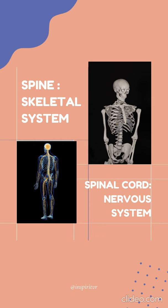Your spine helps you to sit, stand, walk, twist, or even bend. The spinal cord is a complex organization of nerve cells responsible for movement and sensation. It carries signals between the brain and the rest of the body. I guess now you have learned the difference between the spine and the spinal cord.